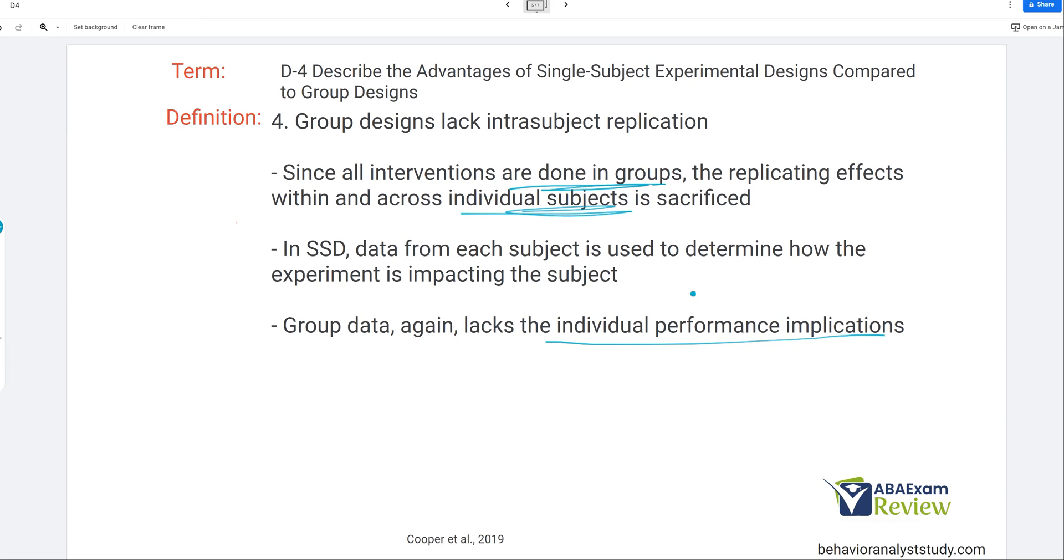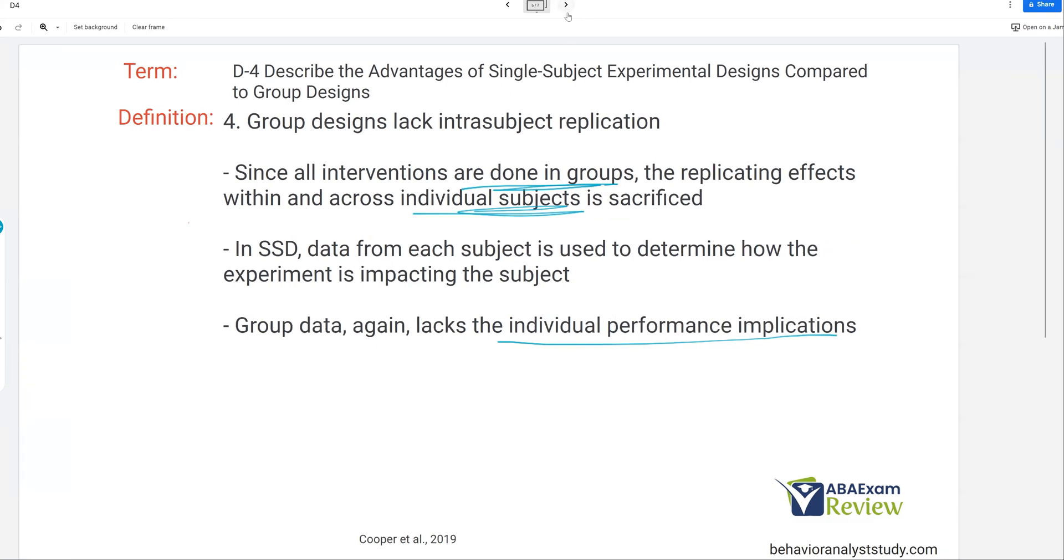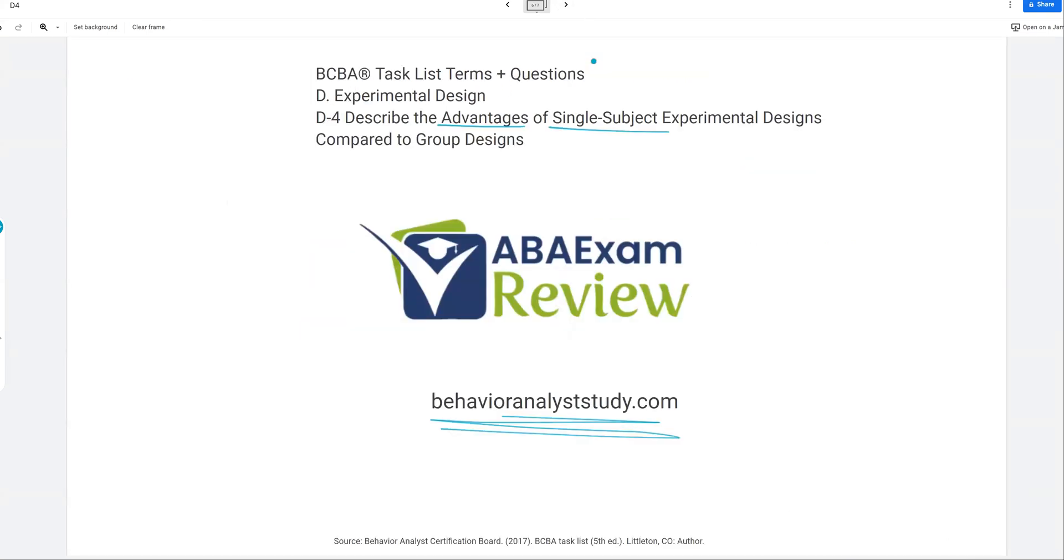Because in ABA, behavior analysis, we're very much focused on the individual and their behavior change. Again, take all of this almost at face value, where we're not saying group designs are bad or wrong. We're trying to give advantages of why we use single-subject. And the main thing is we're focused on that individual change. The single-subject really provides a deeper picture of the individual compared to group designs, which are much more focused on the whole of the population.